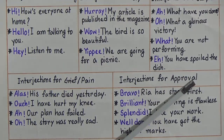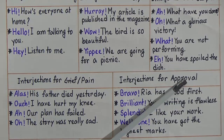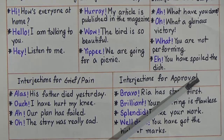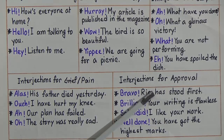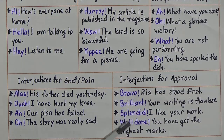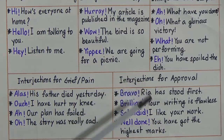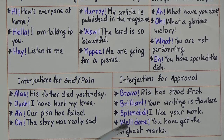Interjections for approval are used to express our emotion of approving something that has occurred. For example: Bravo! We had stood first. Brilliant! Your writing is flawless. Splendid! I like your work. Well done! You have got the highest marks. We use these interjections to show our strong feelings of approval.